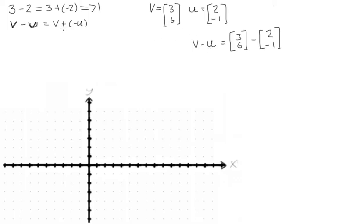Now, if we were to set it like this, we would say this is also the same as v plus negative u. And we could write our vector v, 3, 6, plus the negative of u, which would be negative 2 and 1.